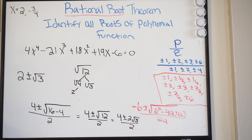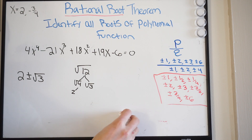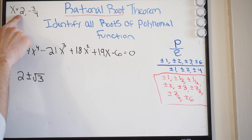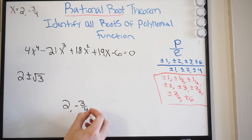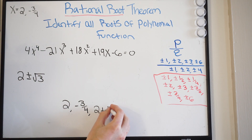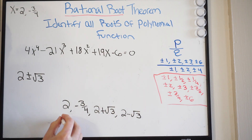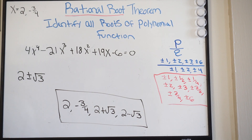Let's write our roots now. Our answer — the zeros and roots of this function — are: 2, negative 3/4, 2 plus the square root of 3, and 2 minus the square root of 3. These are the roots of this function.